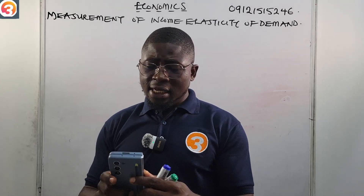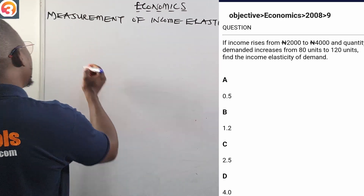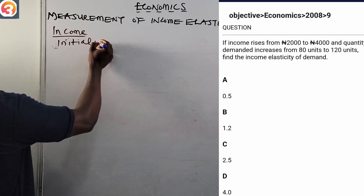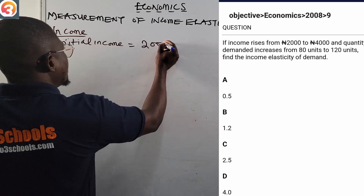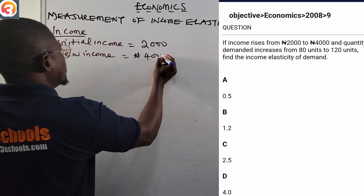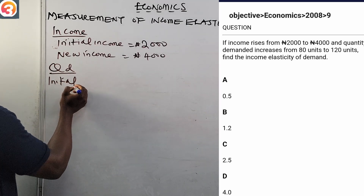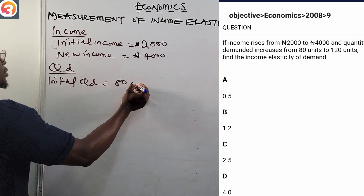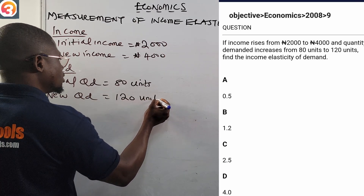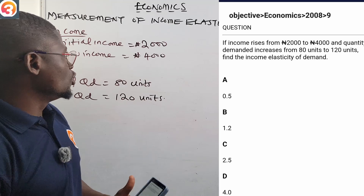Now let us look at the question: 2008 number 9. It says if income rises from 2,000 naira to 4,000 naira, so our initial income is 2,000 naira and new income is 4,000 naira. The initial quantity demanded is 80 units and the new quantity demanded is 120 units. We are asked to find the income elasticity of demand.